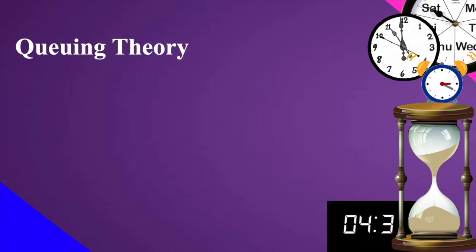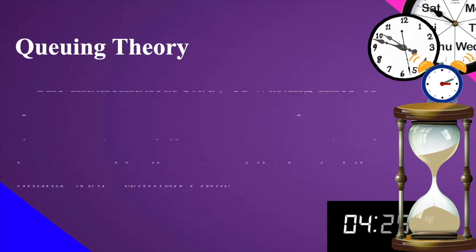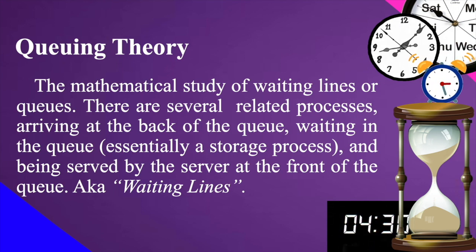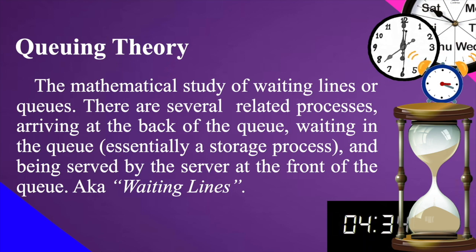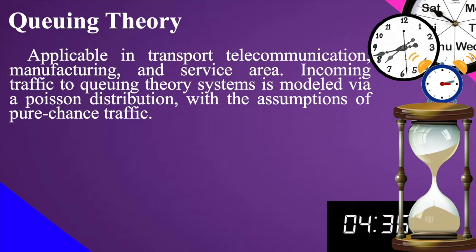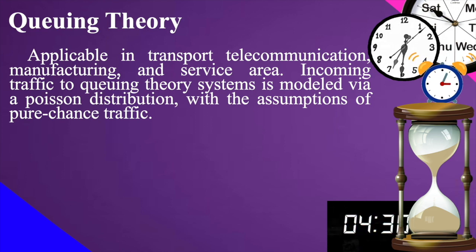So what is queuing theory? Queuing theory is the mathematical study of waiting lines or queues. There are several related processes: arriving at the back of the queue, waiting in the queue — essentially a storage process — and being served by the server at the front of the queue. It is applicable in transport, telecommunication, manufacturing, service areas, and other industries.